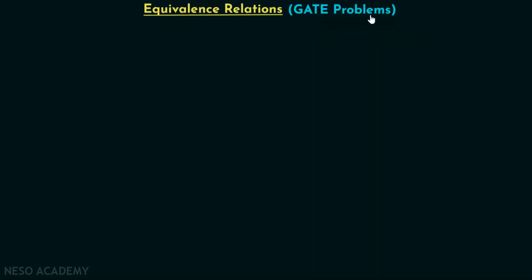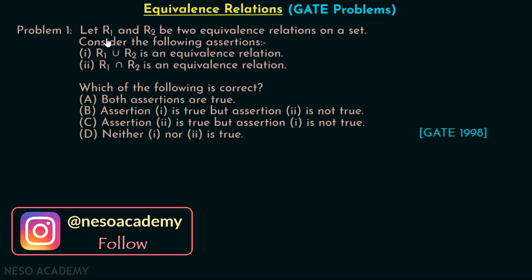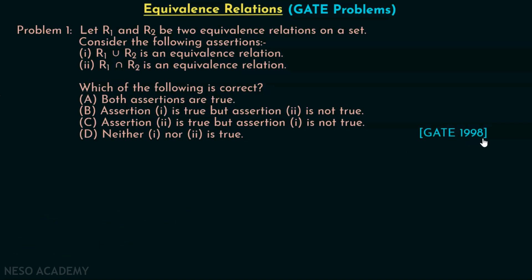In this presentation, we will discuss some more gate problems on equivalence relations. Here is problem 1: Let R1 and R2 be two equivalence relations on a set. Consider the following assertions — R1 union R2 is an equivalence relation; R1 intersection R2 is an equivalence relation. Which of the following is correct? This question has been asked in GATE 1998. I encourage you to pause the video and try to answer on your own.